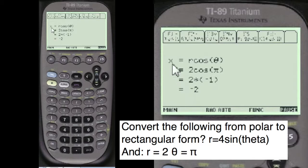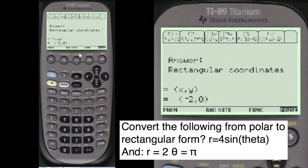So the x is equal to r cosine of theta. It's equal to 2 cosine of theta, and this equals minus 2. Y is equal to r times sine of theta, 2 sine of theta. And 2 times 0 is 0. So the answer is rectangular coordinates x and y: minus 2, 0.